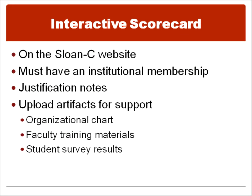Sloan C has also developed an interactive version. Your institution must be an institutional member of Sloan C to access this version. This site is a great resource because it allows you to select your score, but also provide justification notes and upload artifacts, such as org charts, faculty training materials, and survey results — just like you would if your accreditor were coming to visit. You could upload anything to substantiate the score you've chosen.